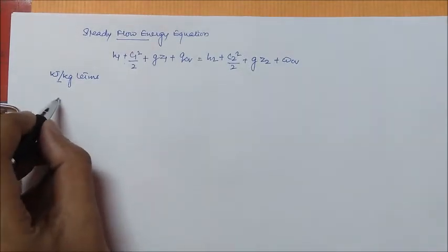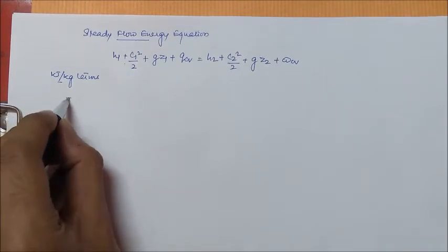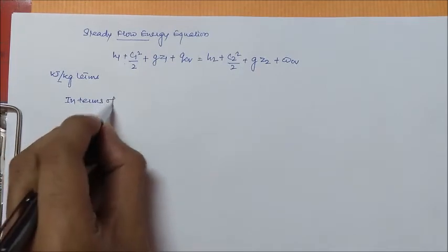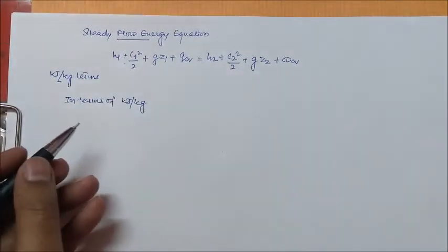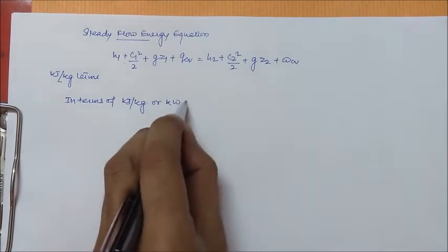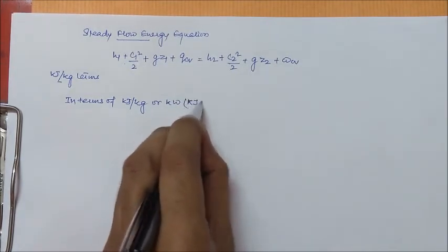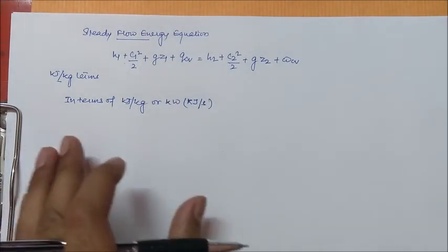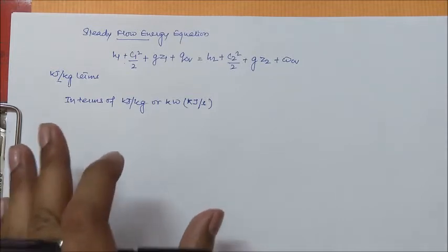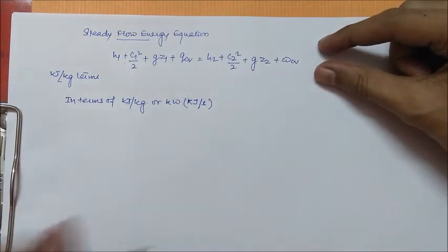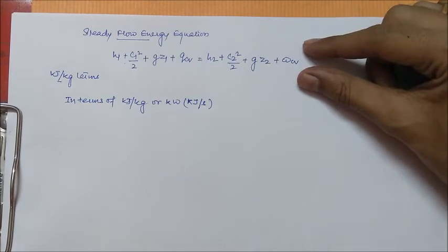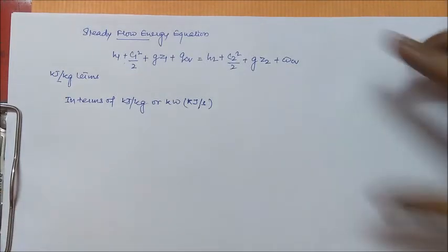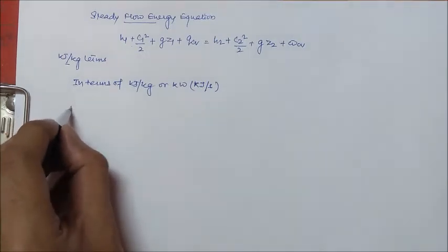When you use this equation directly on SFEE questions and want to solve for an unknown in kilojoule per kg or kilowatt (which is kilojoule per second), you don't get the correct answer if you use the equation exactly as written — even though it is correct. You have to take the units into consideration.